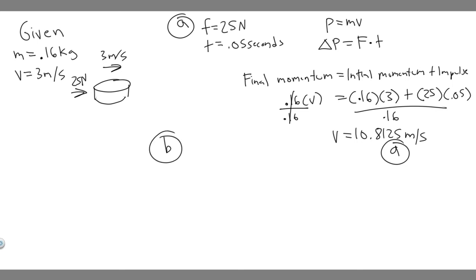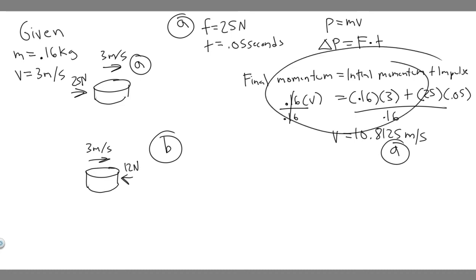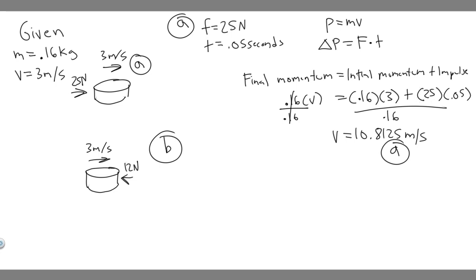Now let's think about Part B. The difference is that instead of a 25-newton force to the right, there's a 12-newton force to the left. We're still assuming the puck starts at 3 meters per second to the right. Since we label rightward as positive and leftward as negative, the force becomes minus 12 newtons. So we just replace 25 with minus 12 in our equation.